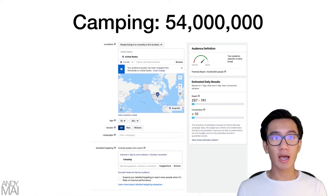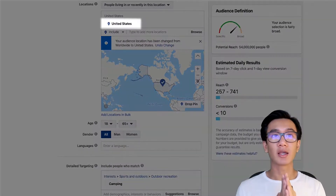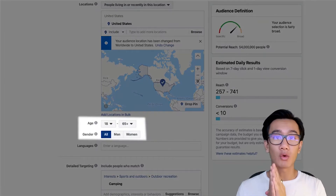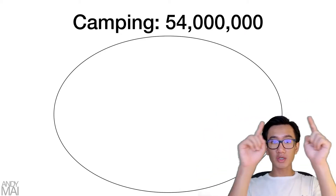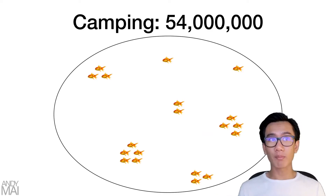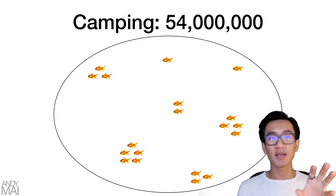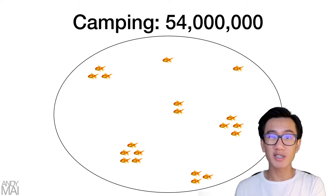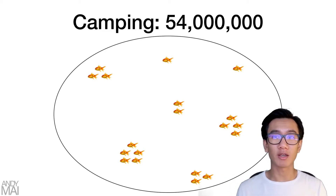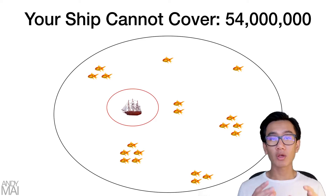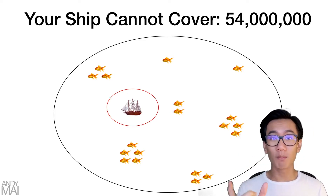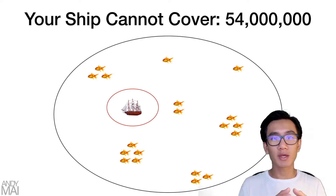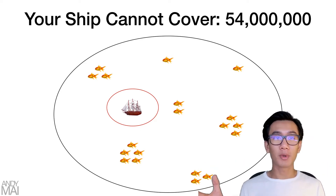Let's say you have the interest camping. It's the United States, you're targeting all genders and ages, and you have an audience of 54 million. You have this pool — this is your camping pool — and within that pool there's a bunch of potential customers, these goldfish. These are people that are willing to purchase anything within the camping niche. When you go ahead and run a $5, $10, or $20 ad to the 54 million size audience, your ship cannot cover the whole 54 million.